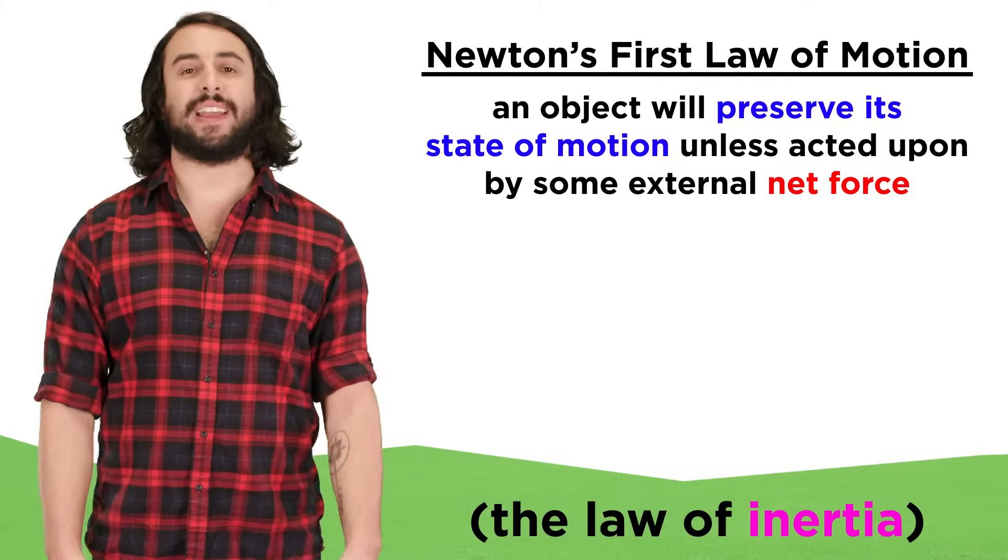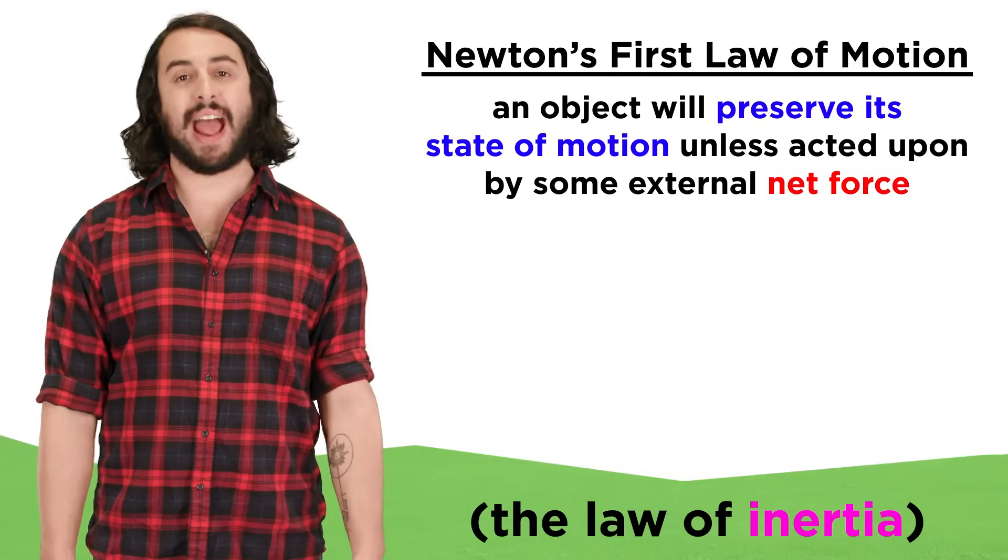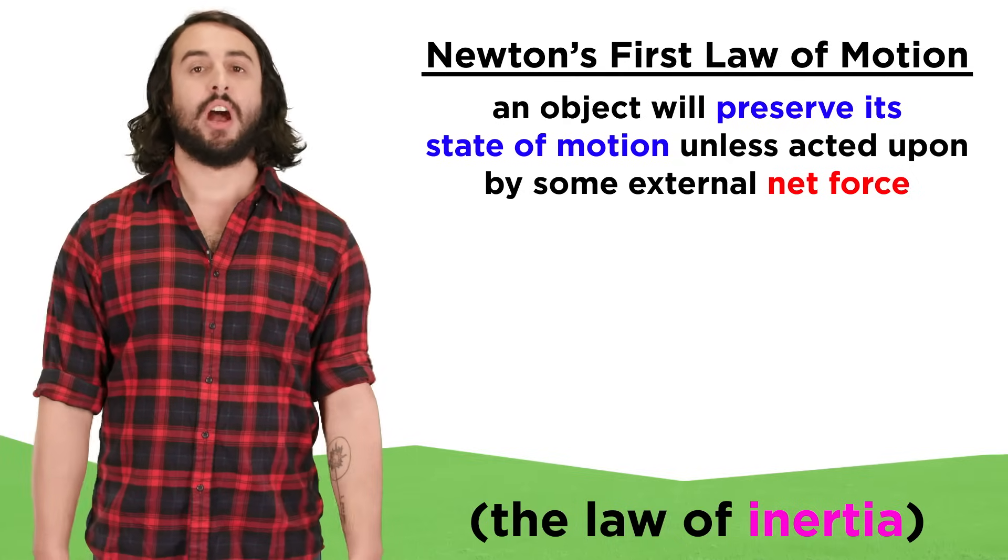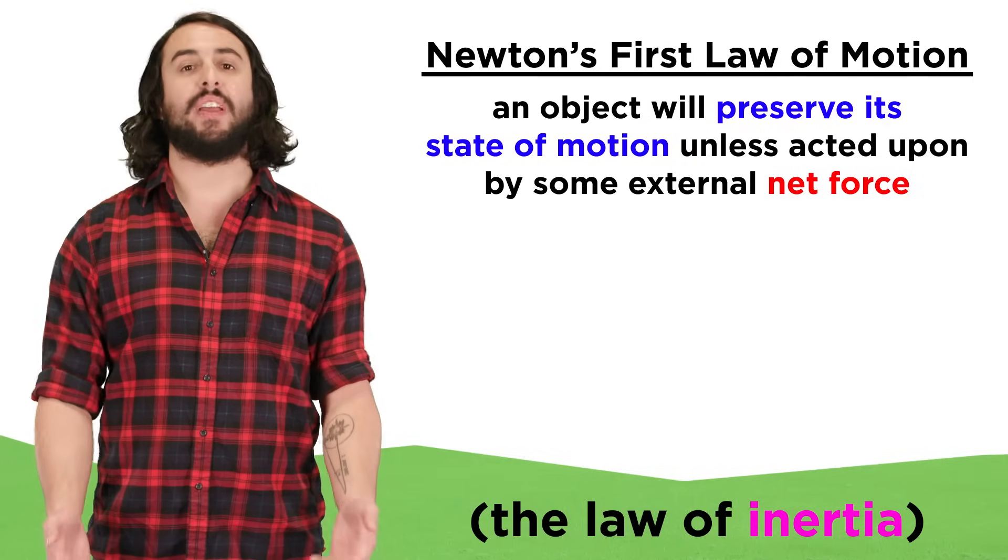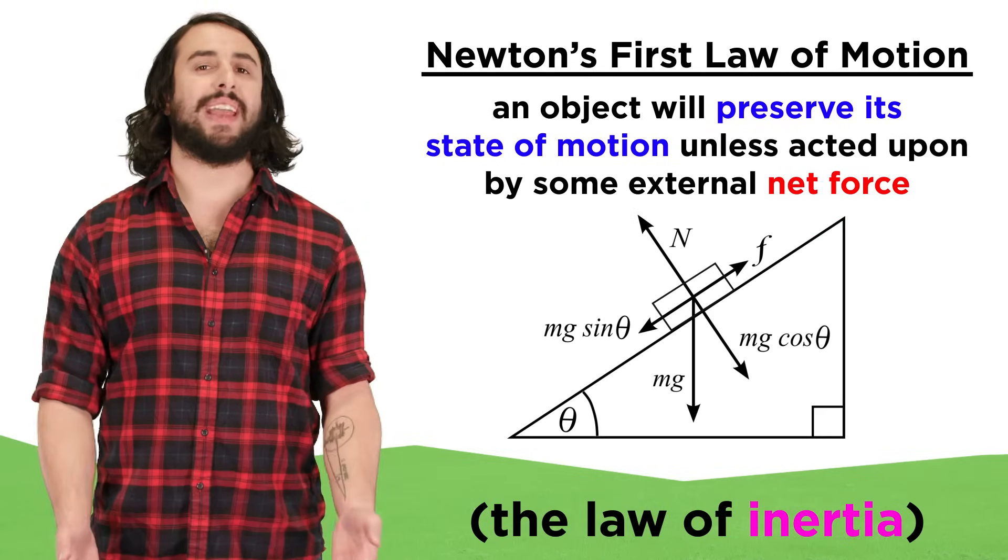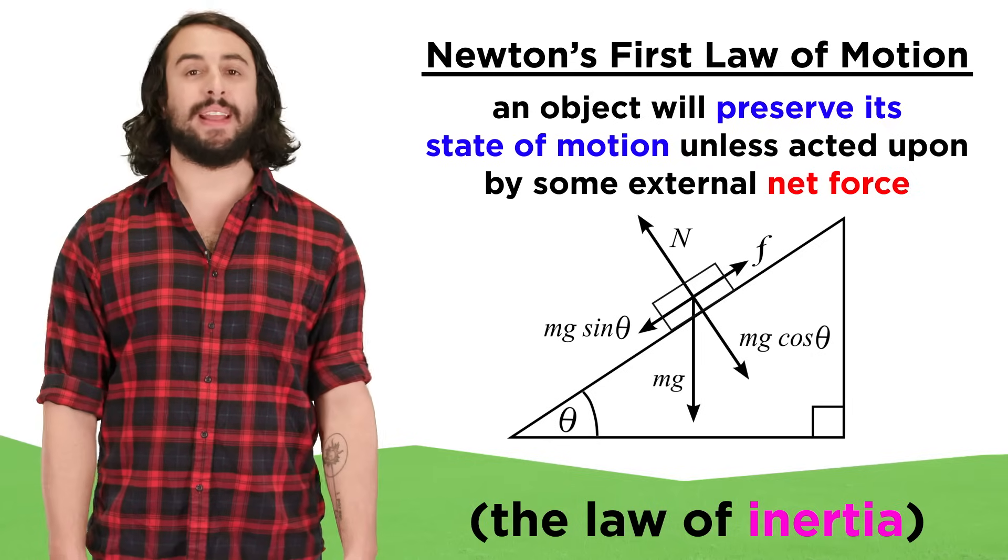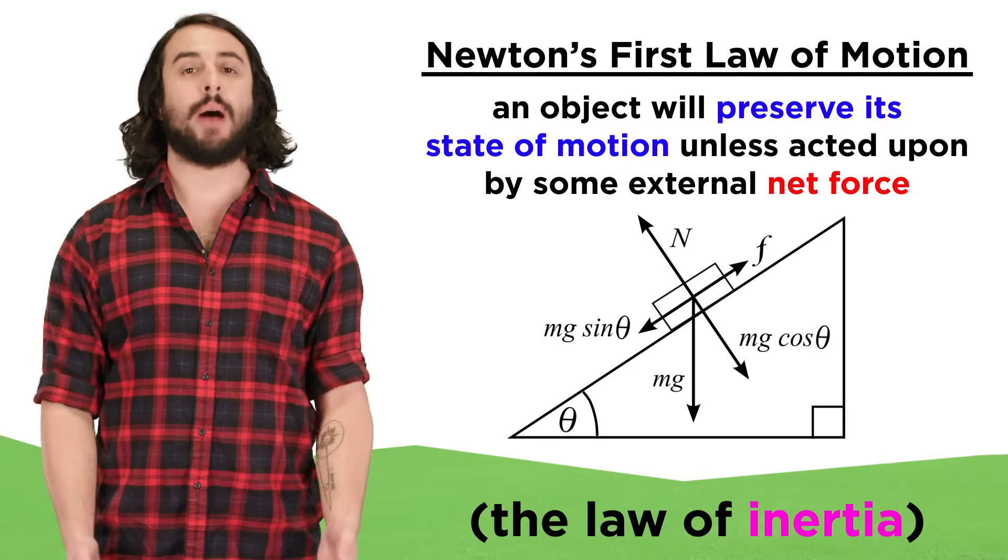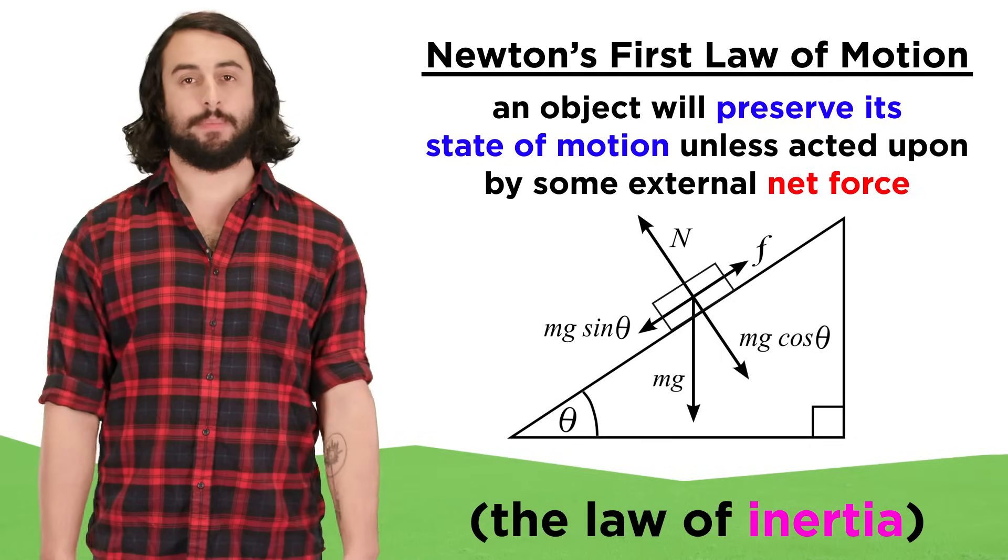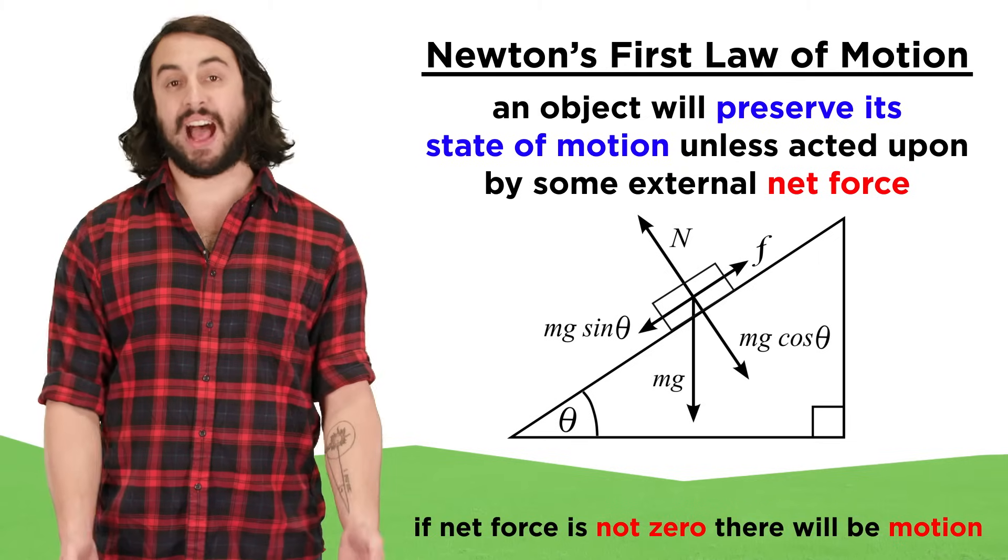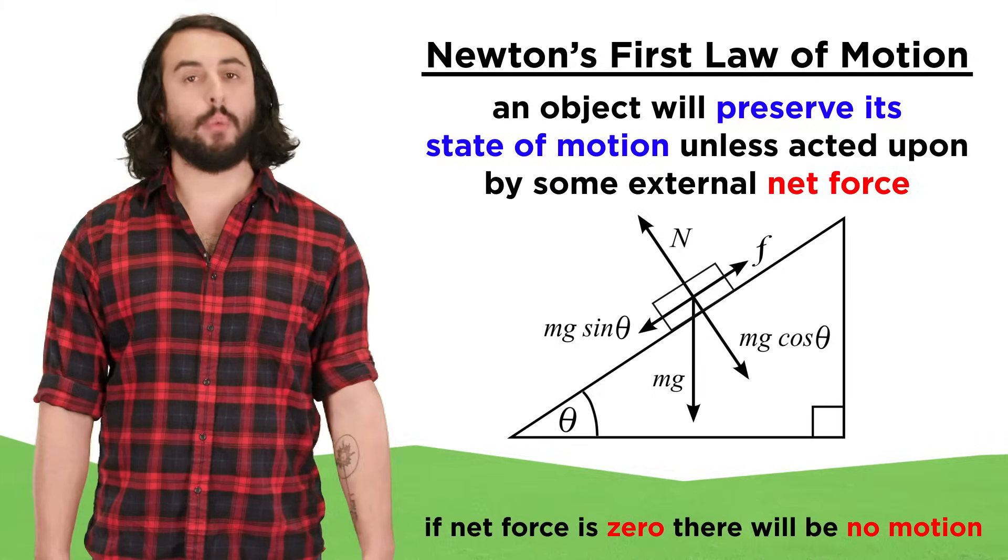So Newton's first law can be summarized as the law of inertia, and it tells us that in absence of a net force, an object will preserve its state of motion, whether at rest or moving with constant velocity. We must understand what net force means, because there will often be multiple forces operating on an object, and the sum of the vectors representing these forces is called the net force. If the net force is not zero, there will be some acceleration. If the net force is zero, there will be no acceleration.